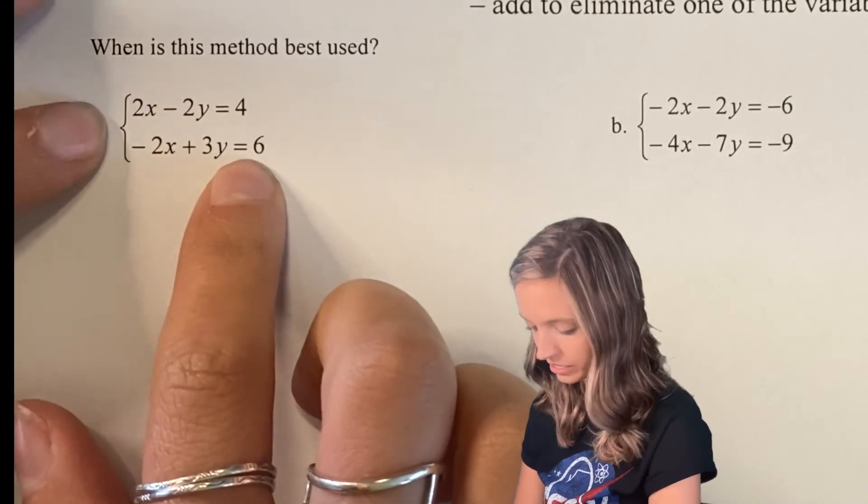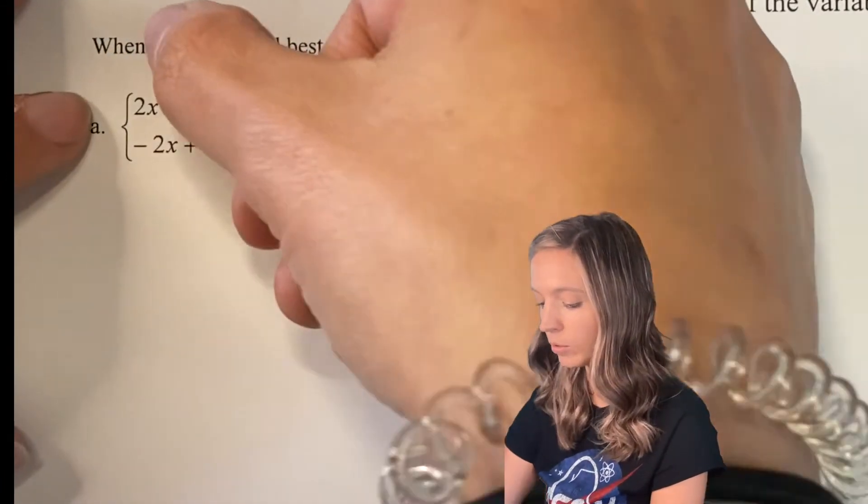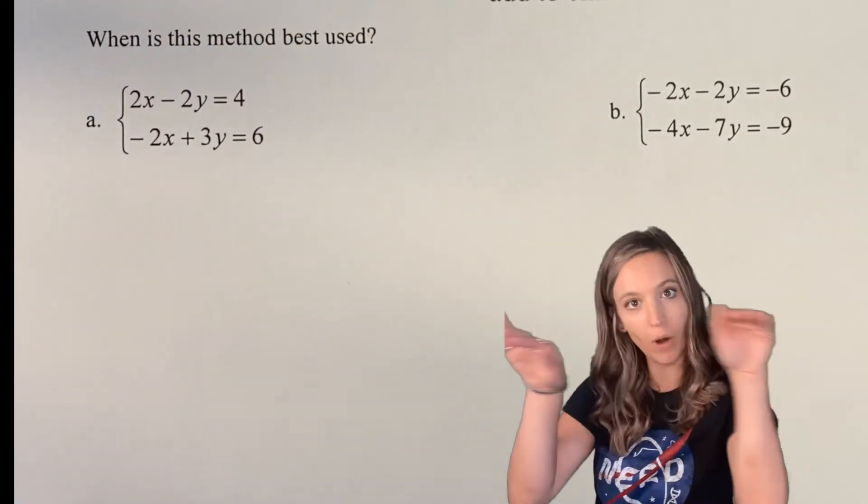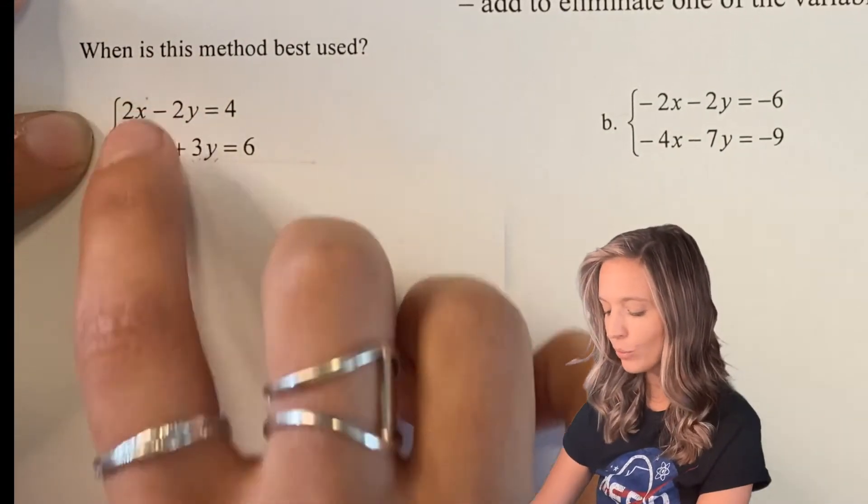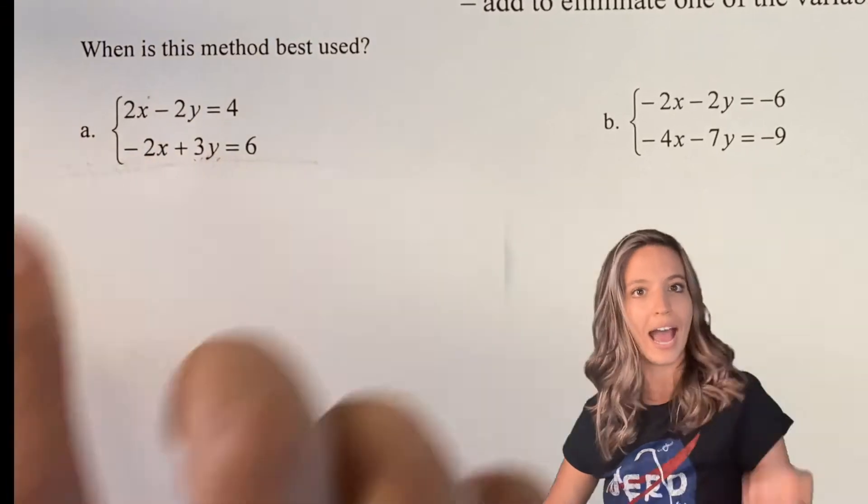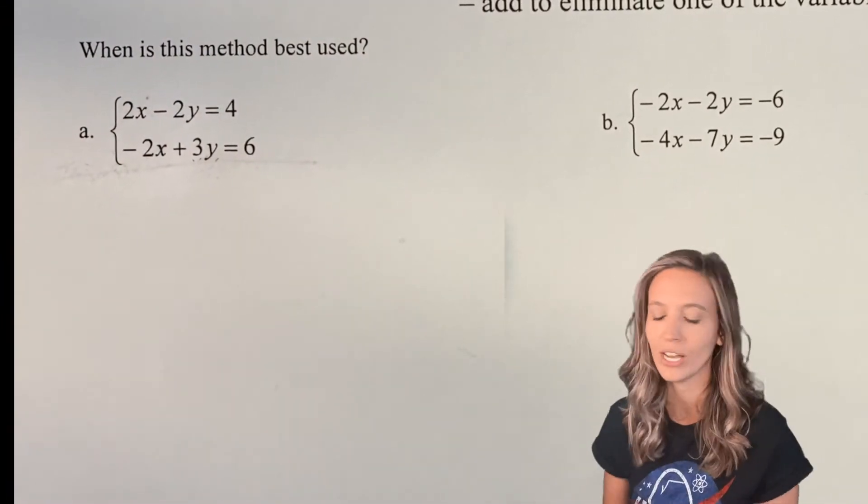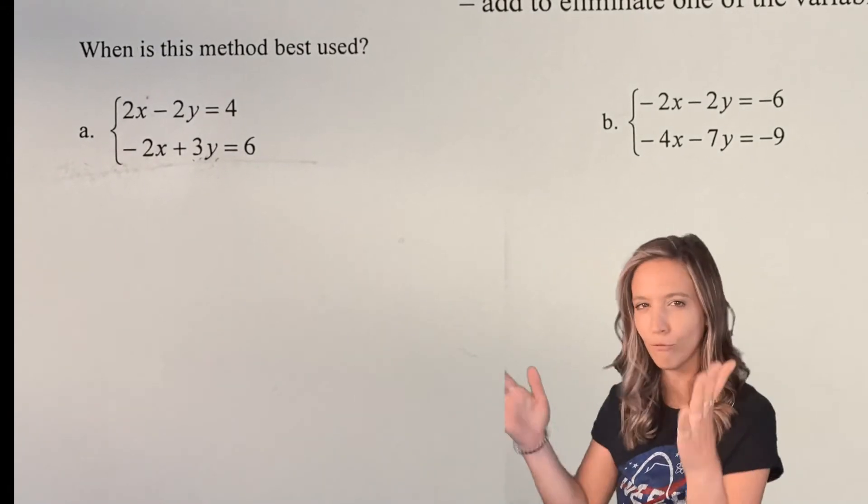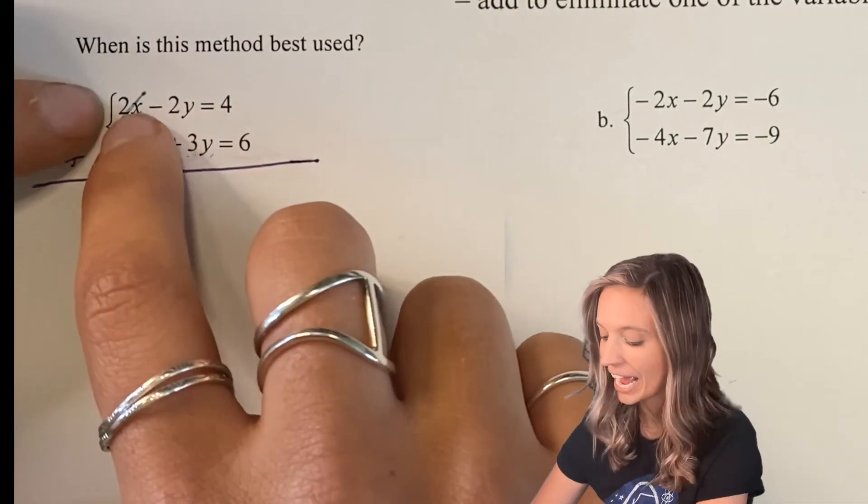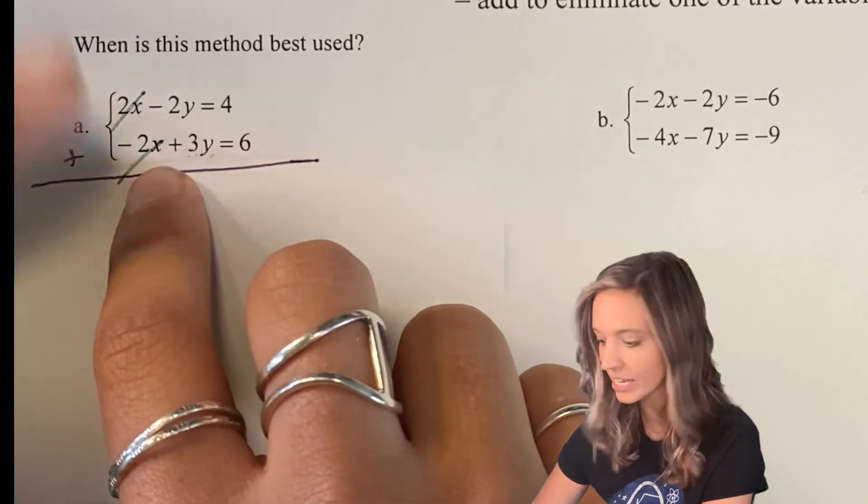We have two equations here in our system. What we want to do is be able to add straight down and eliminate right off the bat one of those variables. If I were to add these two together, my 2x plus my -2x would add out. So I get lucky there and I'm able to eliminate just by adding. We won't always get lucky. Sometimes we'll have to tweak it a little bit before we add.